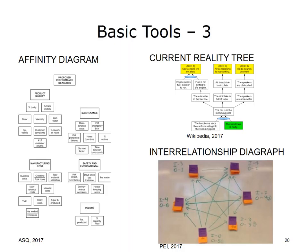Current Reality Tree: The Current Reality Tree is commonly part of the toolkit and employs cause and effect logic to determine what to change by identifying the root causes or core problems. Another purpose of the current reality tree, whether developed by an individual or team, is to create a consensus among those involved with a problem.